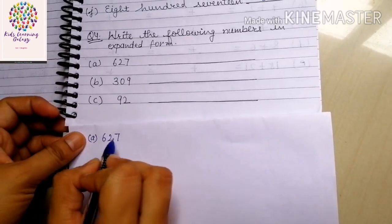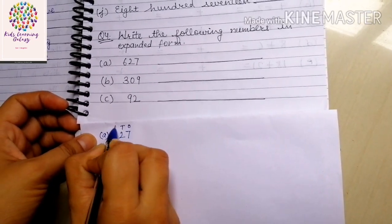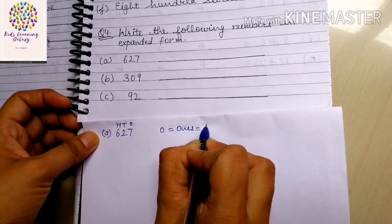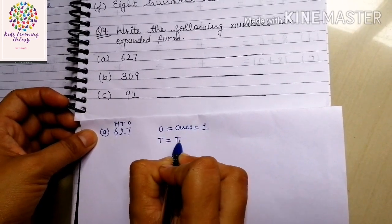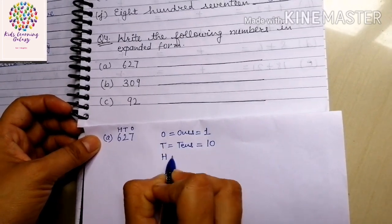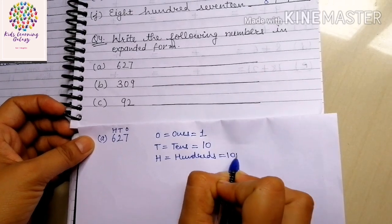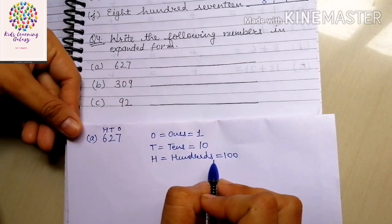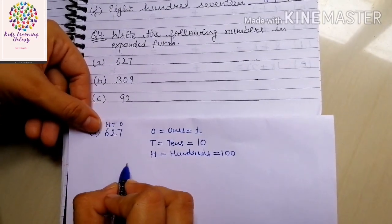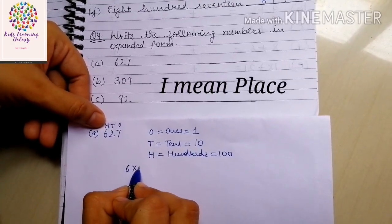Number is 627. We have to write 627 in expanded form. First we write the places of each digit: ones (O), tens (T), and hundreds (H). So H means 100s, T means 10s, and O means 1s. What we will do is multiply each digit with its place value — so multiply 6 by its place value, which is 100.